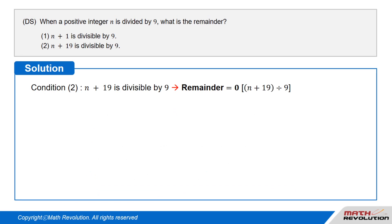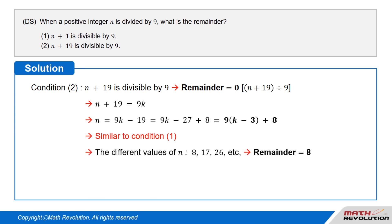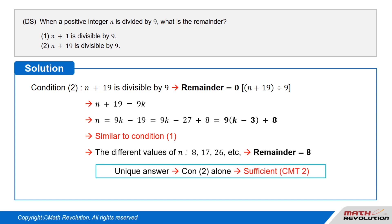Condition 2 tells us that n plus 19 is divisible by 9, meaning the remainder is 0 when n plus 19 is divided by 9. Thus, n plus 19 equals 9k, so n equals 9k minus 19, which can be rewritten as 9k minus 27 plus 8, or 9(k minus 3) plus 8. This is similar to condition 1. The different values of n are 8, 17, 26, etc. In each case, the remainder is 8. This condition also has a unique answer and is sufficient by CMT2.